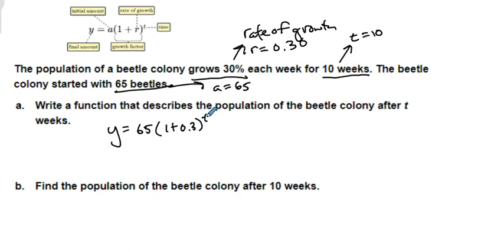They said after t weeks, this is my general case, so just put t. And then usually like any other equation they'll tell us what t is for the specific cases. Let's just simplify. This is y equals 65 times 1.3 to the t power, and this is my general case function.